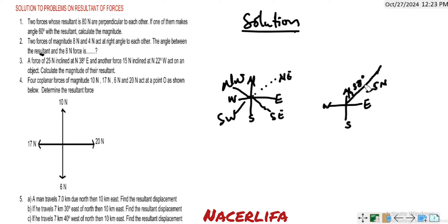The second force is 15 Newton inclined at north 22 degrees west. So this is north and this is west. North 22 degrees west should be around this place — so this is 22 degrees, and this direction is north-west.